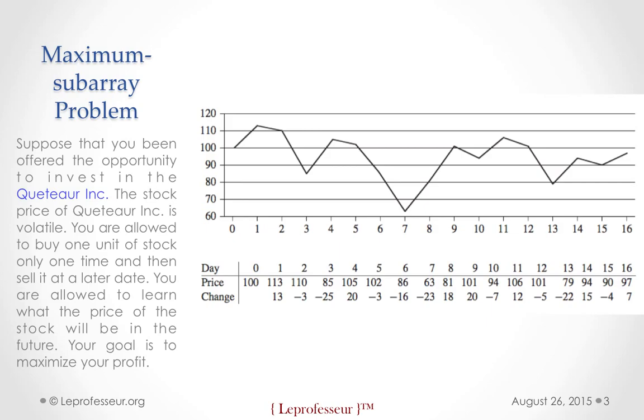Let's talk about an example. This figure shows a stock chart of a company, Qatar. It's a hypothetical stock chart of this company. And the problem here is that the stock price is volatile. You are allowed to buy one unit of stock only at one time and then sell at a later date. You are also allowed to learn what are the prices of the stock in the future dates. Now, your goal is to maximize the profit. As you see here in this chart, day, price, and the change in the price is given here.